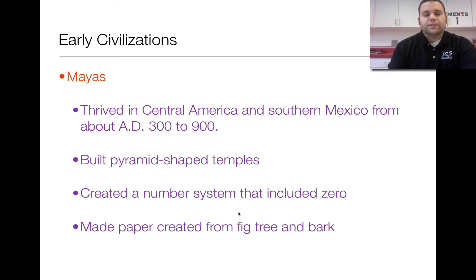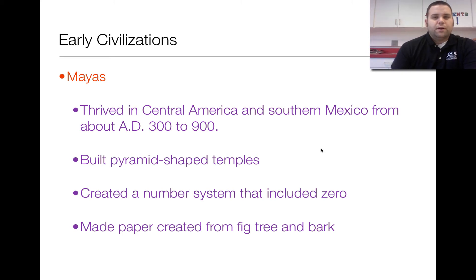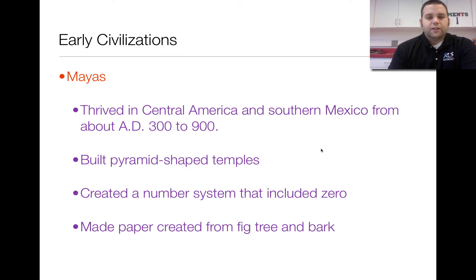The Mayas were a group that thrived in Central America and Southern Mexico from about 300 to 900 A.D. We're talking places like Belize, Guatemala, Honduras, and the Yucatan Peninsula in Mexico.